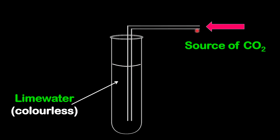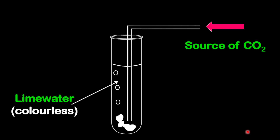Now this tube will be connected to a source that is producing gas, or you could simply blow into this tube. Once the gas is passing through the lime water, over time what you'll notice is that the lime water will become cloudy or milky white. If it becomes cloudy, then you can conclude that carbon dioxide is present in that gas.